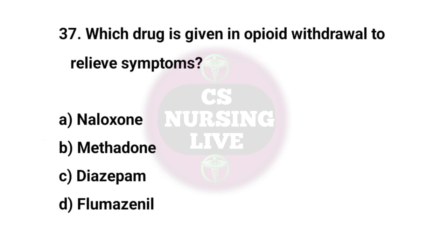Question No. 37. Which drug is given in opioid withdrawal to relieve symptoms? Right answer is B. Methadone.